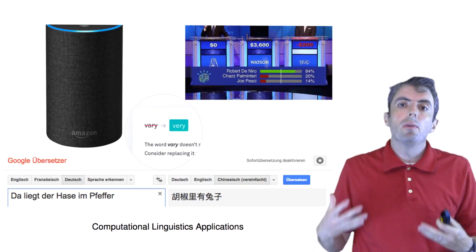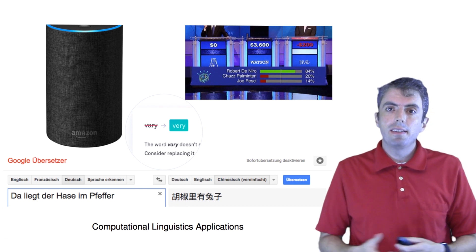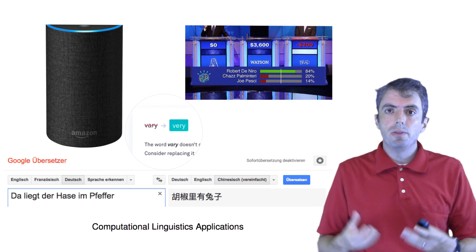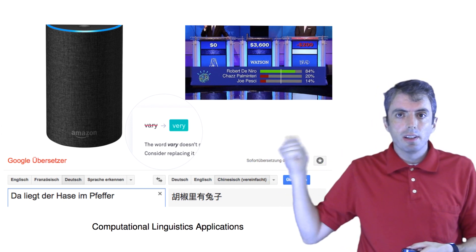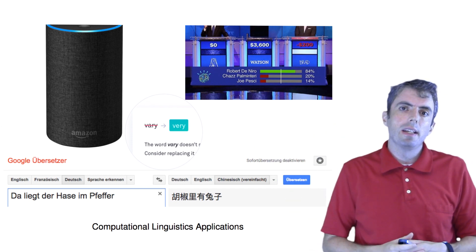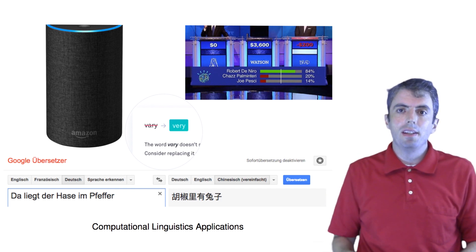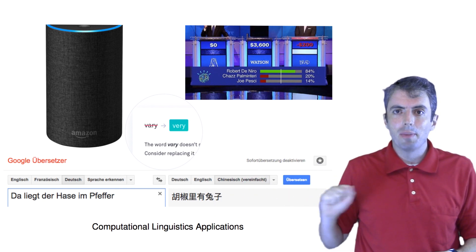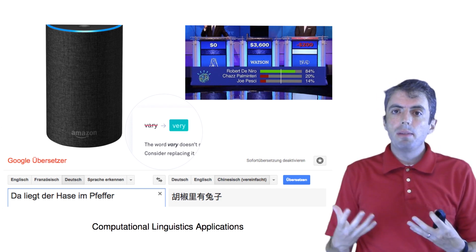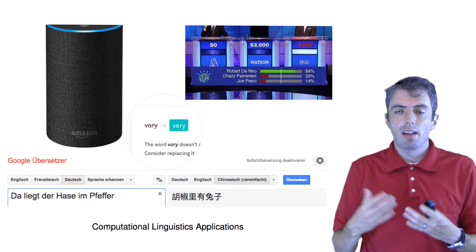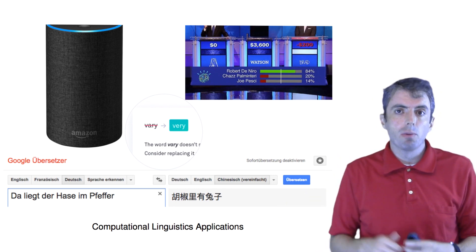You may already be aware of many applications of computational linguistics. Many of these applications use machine learning to be successful, from talking to your Alexa device to Watson winning trivia games to machine translation helping you figure out what is meant when someone speaks to you in German and how to translate that into Chinese. All of these are pretty big advances in computational linguistics brought about by recent revolutions in machine learning.